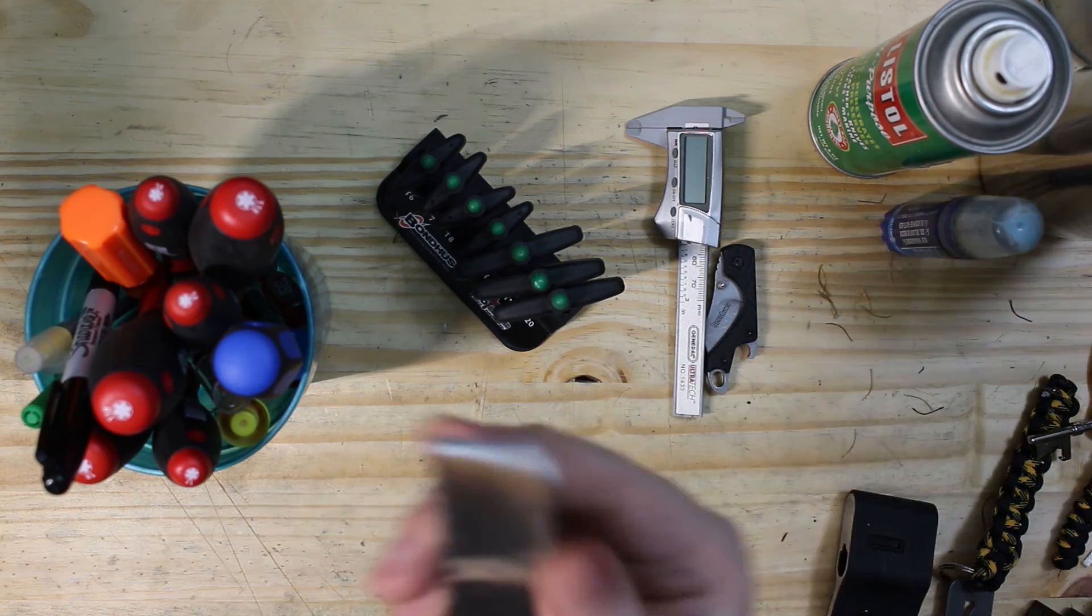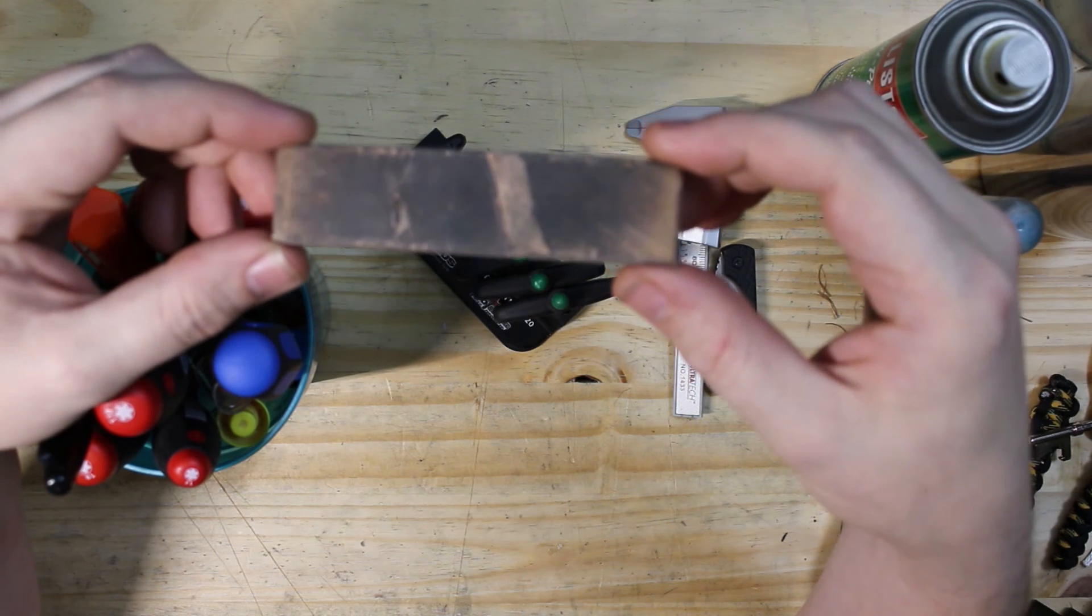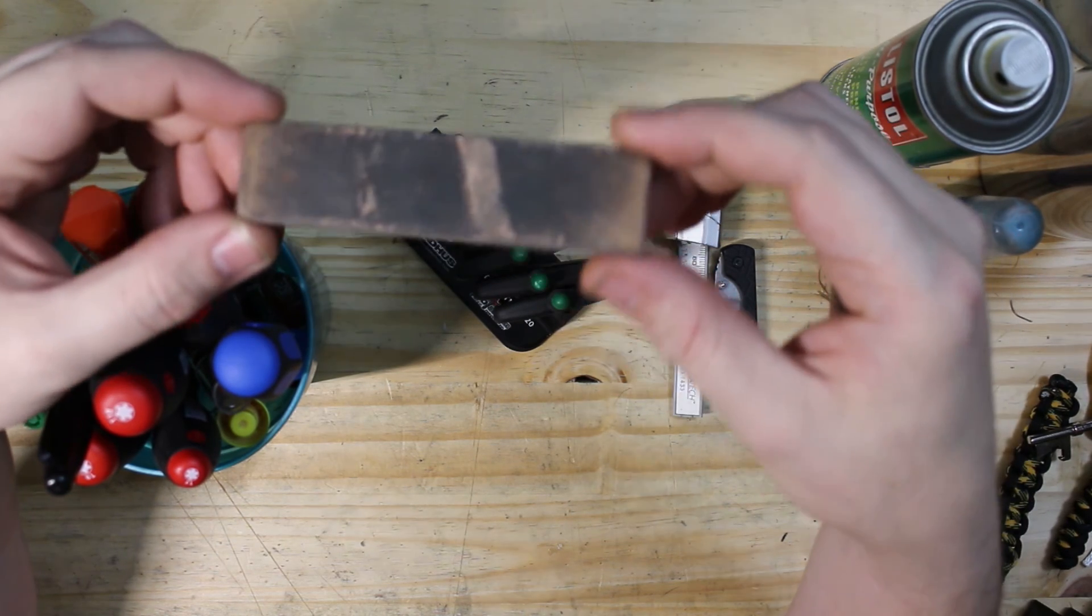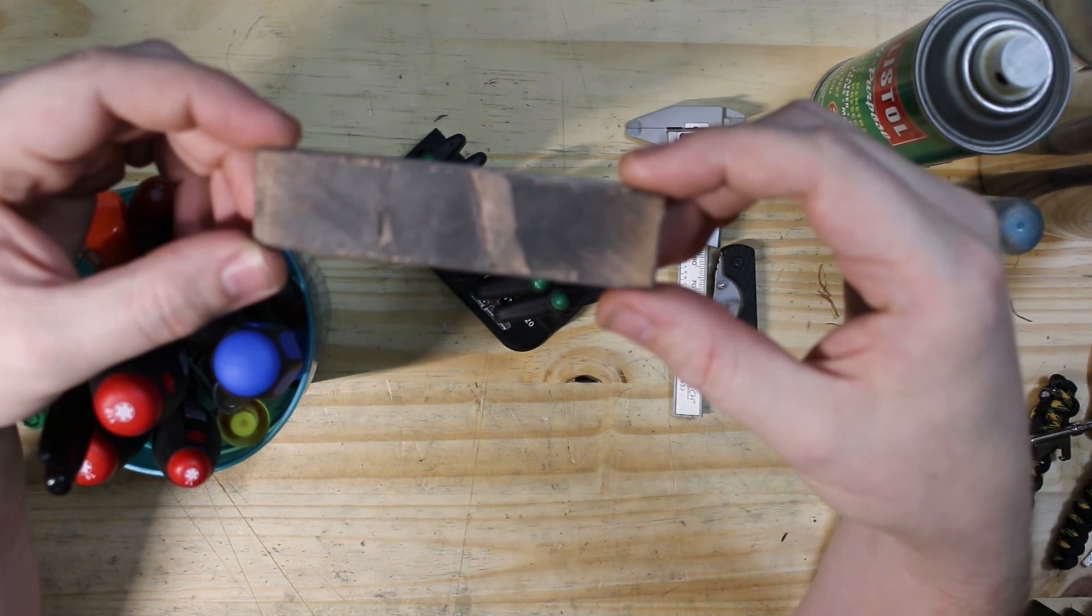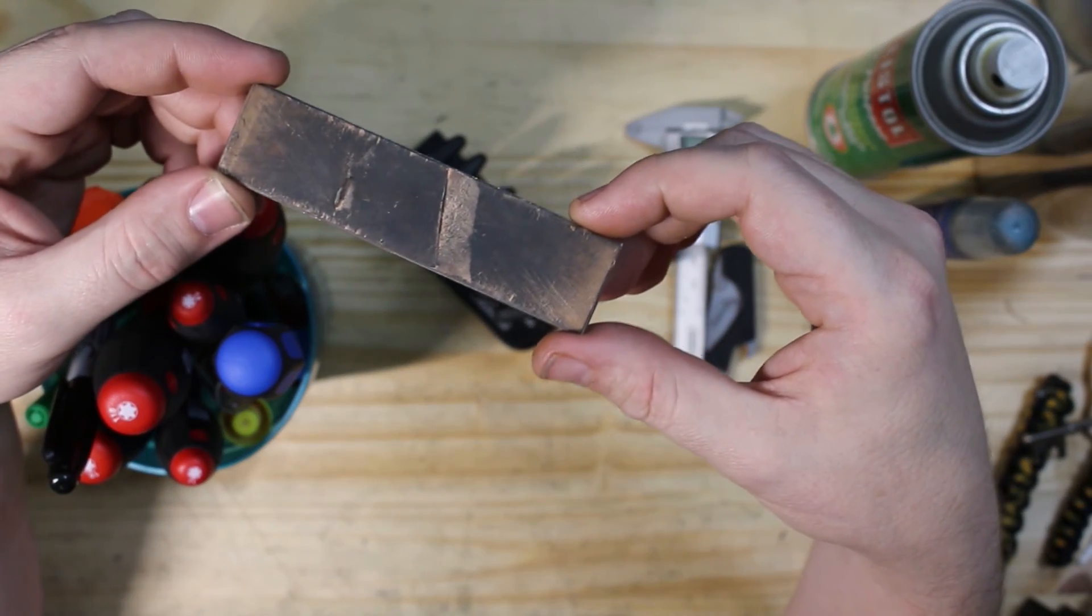One last thing I'll show you. Some of these other guys with their KMEs use these kangaroo strops. Well, I tried, and that's what my strop ended up looking like. So I just use flat bench strops.